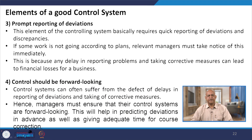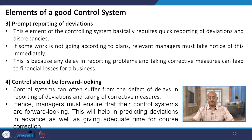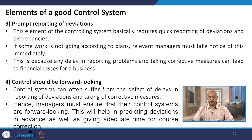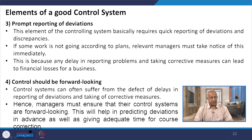Prompt reporting of deviations is also required. This element of the control system requires quick reporting of deviations and discrepancies — if work is not going according to plan, relevant managers must take notice immediately, because any delay in reporting problems and taking corrective measures can lead to financial losses.